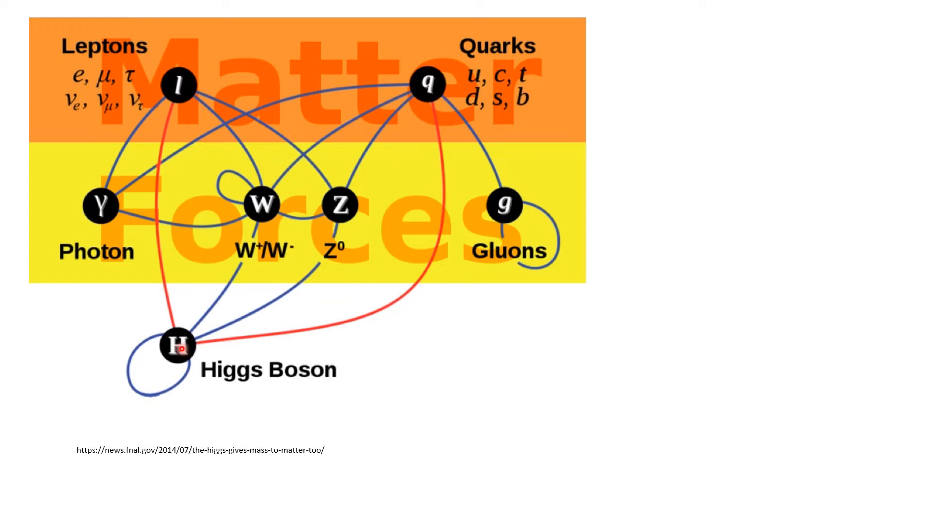The way they actually get their mass is there's something known as the Higgs expectation value, which gets multiplied by a coupling constant known as the Yukawa parameter. Imagine taking the mass of the Higgs boson and multiplying it by the Yukawa parameter.